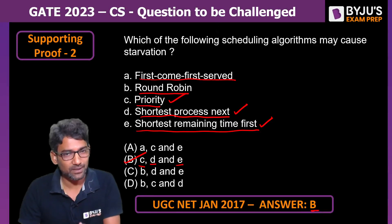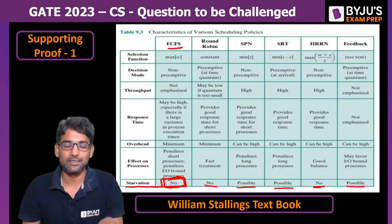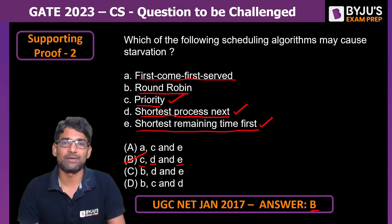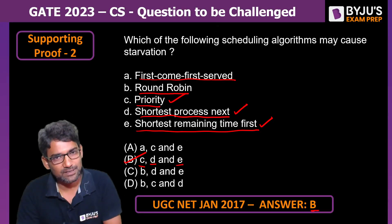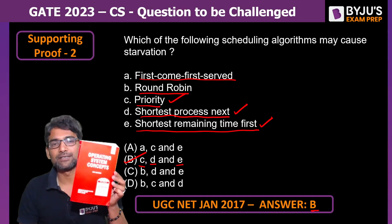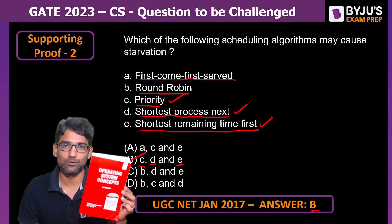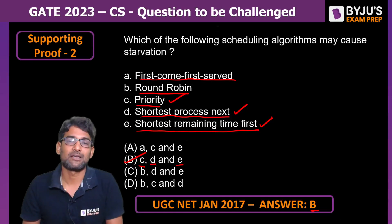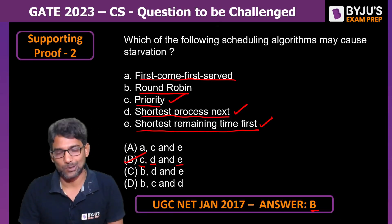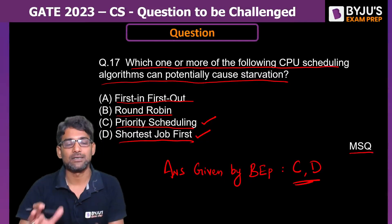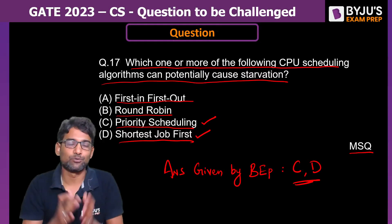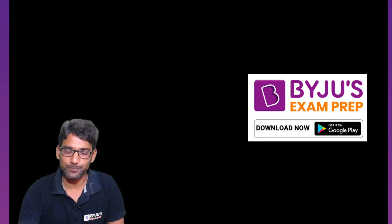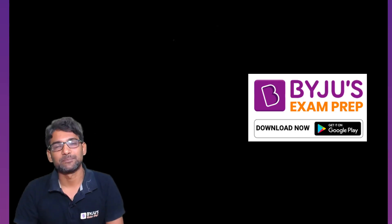So these are the two supporting proofs to challenge this question: one from William Stallings' textbook clearly stating no starvation with FCFS, and a previous UGC NET 2017 question confirming the same. Even in Galvin's textbook, only the convoy effect is mentioned for FCFS — not starvation or indefinite blocking. You can challenge question number 17 in the technical section, which is question number 27 overall. All the best, I hope this is helpful. Thank you, take care, and have a great time!